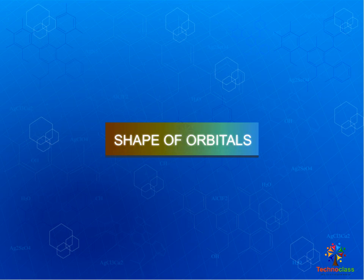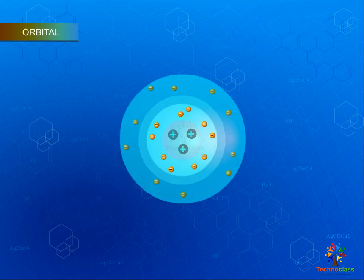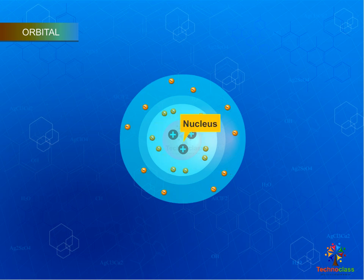Shape of Orbitals. An orbital means region around the nucleus where you can find maximum number of electrons, that means electron cloud. The shape of the region represents the orbital shape.